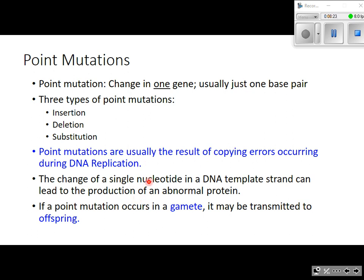If you change a single nucleotide in the DNA template strand — just one letter, an A, G, C, or T — that can lead to the production of an abnormal protein. If a point mutation occurs in a gamete, a sperm cell or egg cell, it may be transmitted to offspring. It's important to note that if a point mutation occurs in a skin cell, liver cell, or kidney cell, you cannot pass those mutations to your offspring — you can only pass down mutations that occur in gametes.